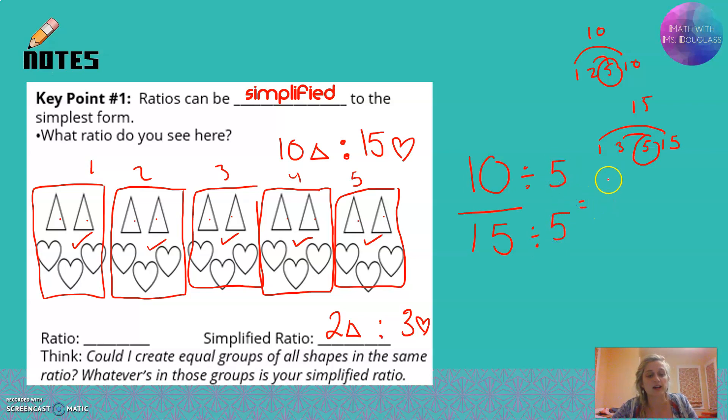10 divided by 5 is 2, kind of like the 2 right here. What do you think 15 divided by 5 is? It's 3. Remember that these are hearts, these are triangles. Two triangles to every 3 hearts. That's how you can simplify without a picture.